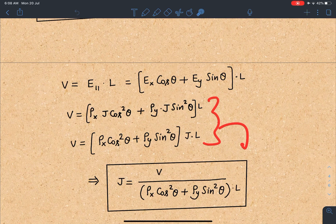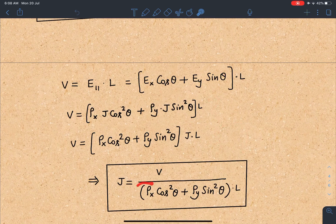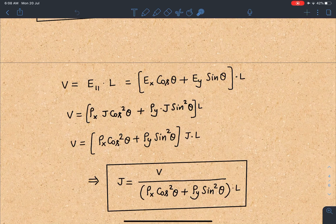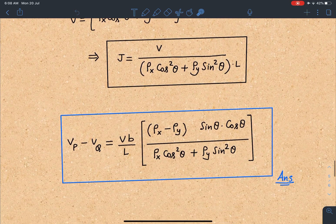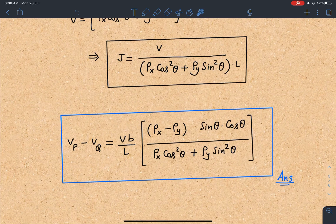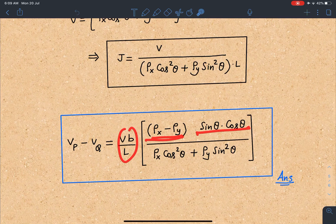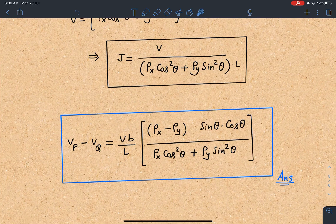You can simplify and you will be getting J = V/(ρ_x cos²θ + ρ_y sin²θ) × L. Now this J value I'm going to substitute there and I will be getting V_P - V_Q = (Vb/L) × [(ρ_x - ρ_y) sin θ cos θ] / [ρ_x cos²θ + ρ_y sin²θ]. This is going to be the answer for this problem.